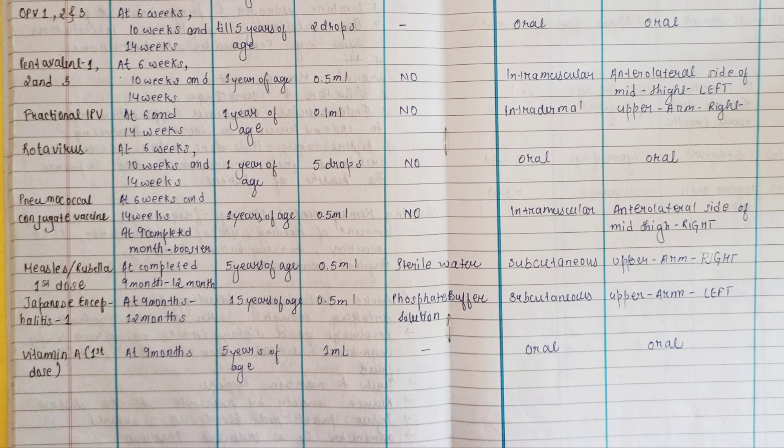Measles and Rubella vaccine is given at completed nine months till five years of age. The dose is 0.5 ml, diluted with distilled water, and given subcutaneously at the upper right arm. Japanese Encephalitis is given at nine months till 15 years of age, with a dose of 0.5 ml.